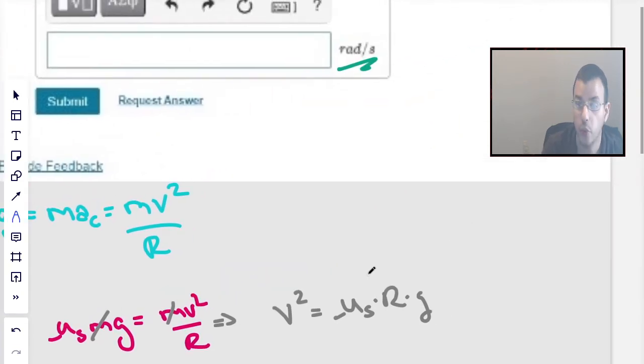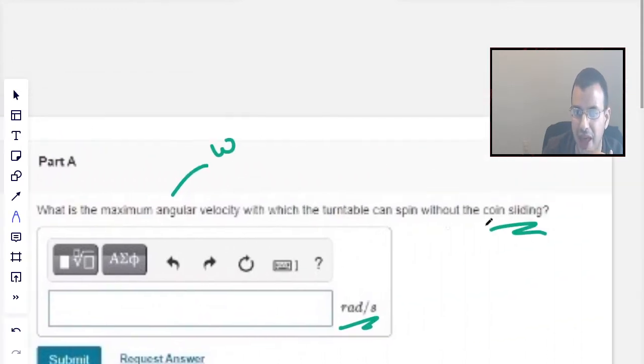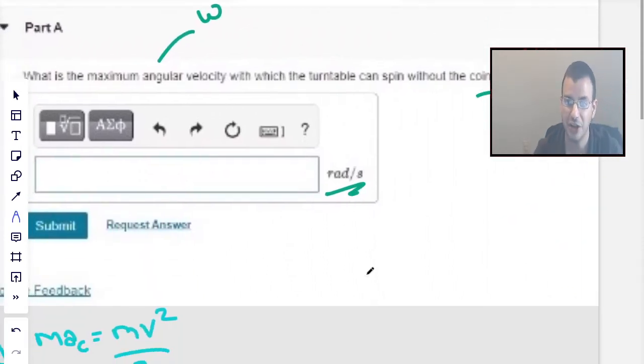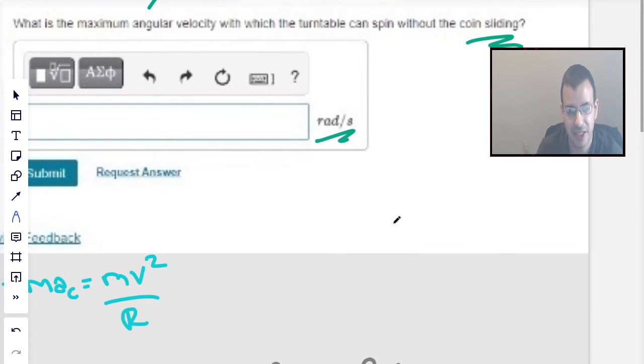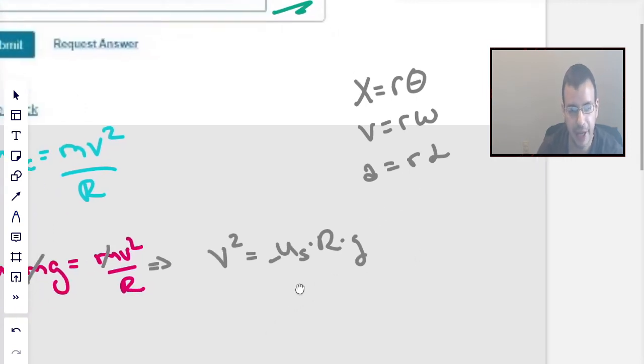So the relationship when there's turning without slipping. So what is the maximum angular speed at which the turntable can spin without the coin sliding? So without sliding, without slipping. That means that the relationship x = rθ, v = rω, a = rα. This is the relationship between linear and angular motion. So what we want is v = rω.